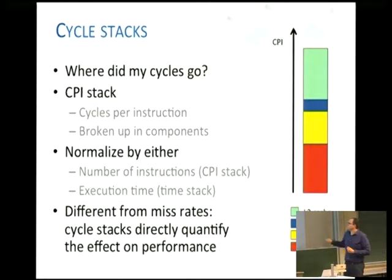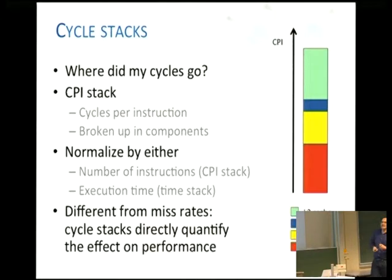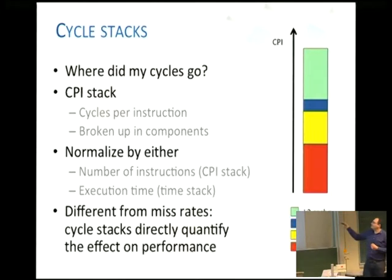This is a really good start. This is a single thread, and it shows the components. We can see there's quite a large component that is L2 cache — that means hitting in the L2 cache causes this much performance penalty, about 33% of the cycles.